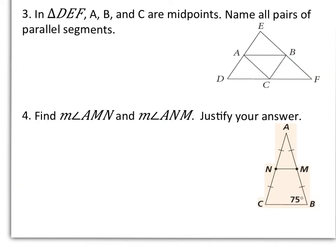Okay, let's look at two more examples in this section. Number 3 says in triangle DEF, A, B, and C are midpoints. Name all pairs of parallel segments. So let's start with midsegment AB. Well, midsegment AB is parallel to line segment DF.